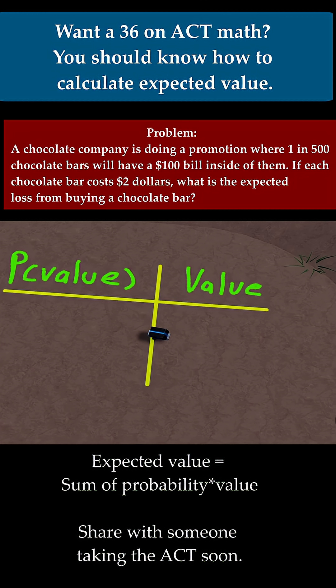So what we need to do is we need to define the values and the probability of those values. First off, we know that if we buy a chocolate bar, you could win $100. That's the value. What was the probability of that? Well, the probability is just 1 out of 500. Because it said that 1 in 500 chocolate bars will have this. So that's the probability. It's just 1 over 500.